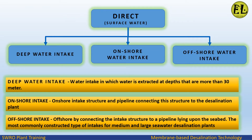Surface intakes are classified into three main groups: deep water intake, onshore water intake, and offshore water intake. Deep water intake extracts water at depths of more than 30 meters. Onshore intake uses an onshore intake structure and a pipeline connecting it to the desalination plant. Offshore intake connects the intake structure to a pipeline lying upon the seabed, and is the most commonly used type for medium and large plants.